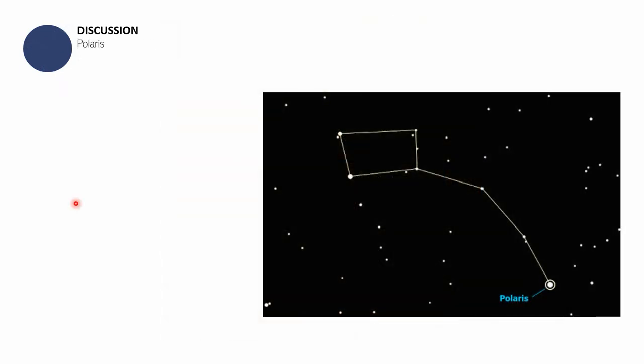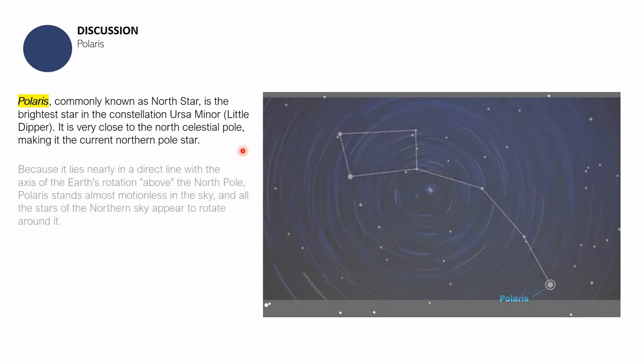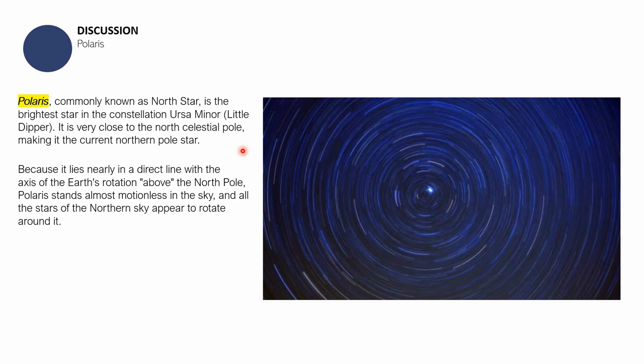Now we move to a discussion about Polaris. Polaris is commonly known as the northern star or the north star, and it is the brightest star in the constellation Ursa Minor, or the Little Dipper, or the Little Bear. It is very close to the north celestial pole of planet Earth, making it the current northern pole star. It is actually the current northern pole star because there is a possibility for that to change, because it lies nearly in a direct line with the axis of the Earth's rotation above the North Pole.